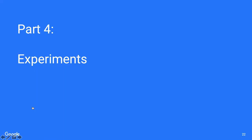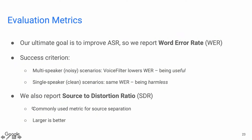We use two metrics: word error rate and source-to-distortion ratio. We report word error rate because our ultimate goal is to improve ASR. Our success criterion has two parts: first, if the audio is noisy from multiple speakers, VoiceFilter should reduce word error rate; second, if the audio is already clean from a single speaker, VoiceFilter should have the same word error rate — meaning we are being harmless. Source-to-distortion ratio measures the quality of the enhanced audio and is a popular metric in source separation.